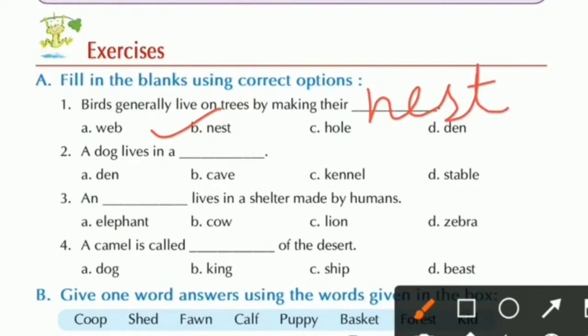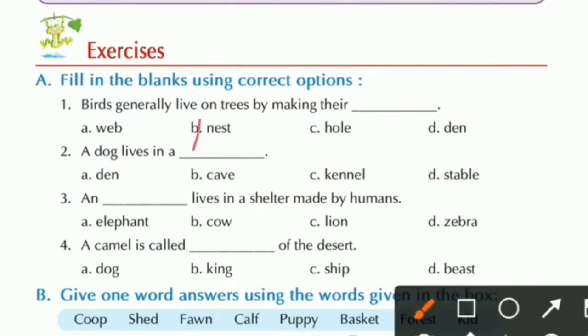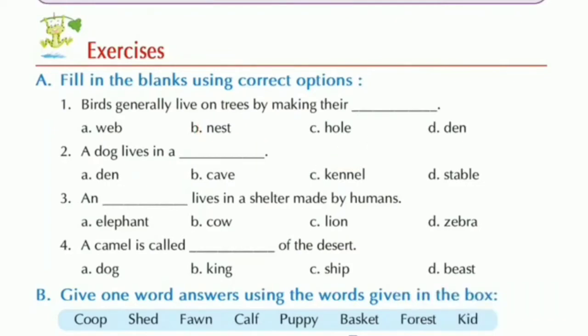Number three: A dash lives in a shelter made by humans. Options: elephant, cow, lion, or zebra. Answer: a cow lives in a shelter made by humans.